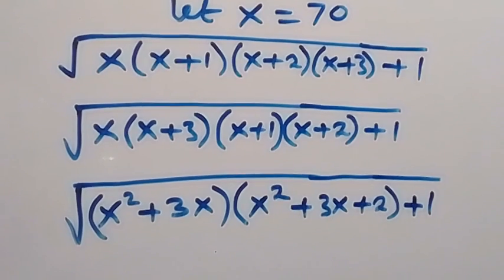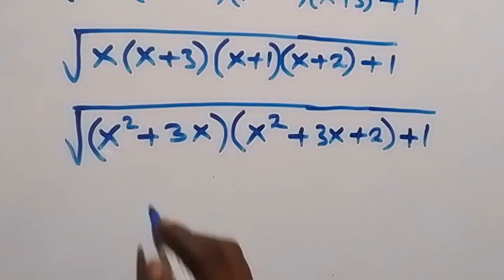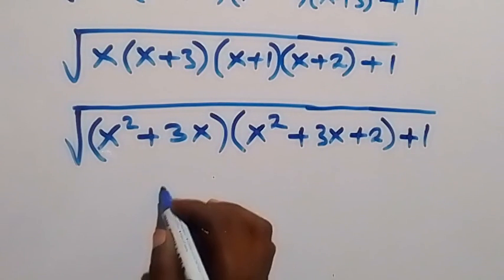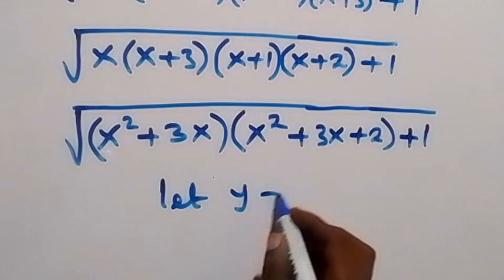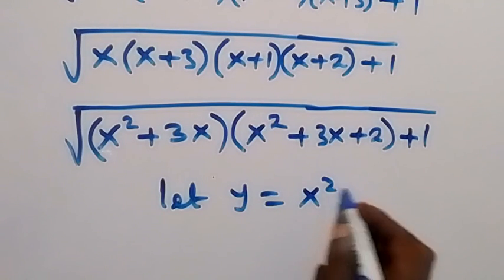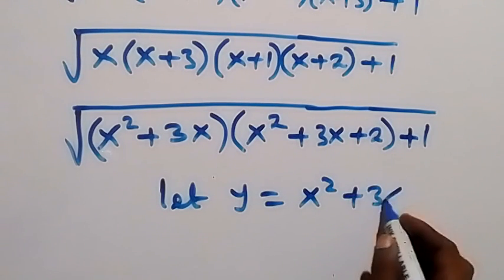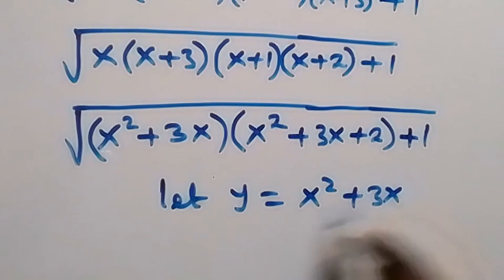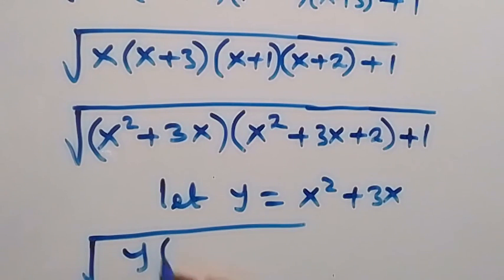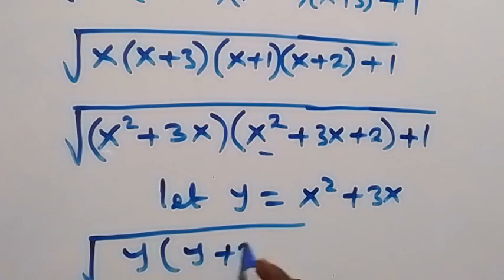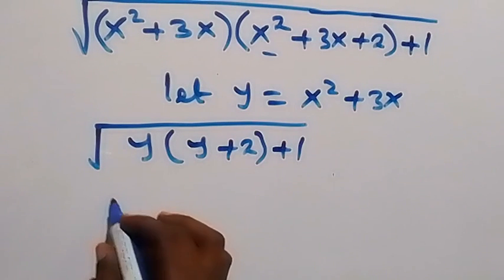So we have x squared plus 3x. Now let y be equal to x squared plus 3x. Then we can write this in terms of y as the square root of y(y plus 2), then plus 1.